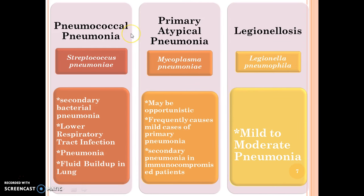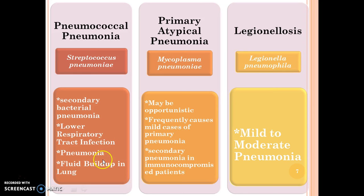Pneumococcal pneumonia is caused by Streptococcus pneumoniae. The symptoms are secondary bacterial pneumonia, lower respiratory tract infection, pneumonia, and fluid buildup in the lungs.